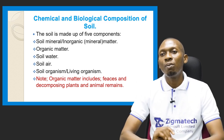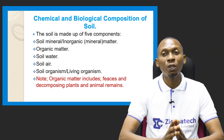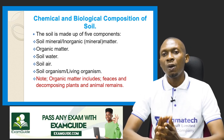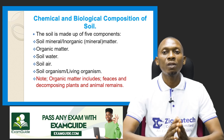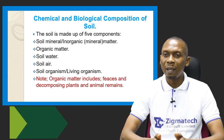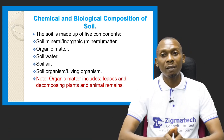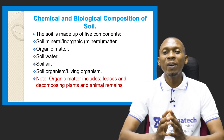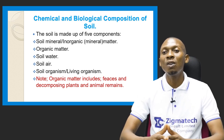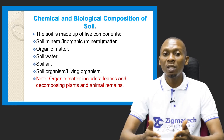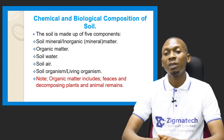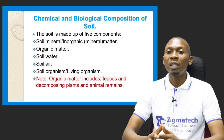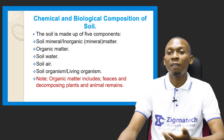Now we look at the chemical and biological composition of soil. Soil is made up of five components: soil minerals (inorganic or mineral matter), organic matter, soil water, soil air, and soil organisms — the living organisms such as termites and earthworms found when you dig into the soil. Organic matter refers to the decaying plant and animal remains mentioned earlier.